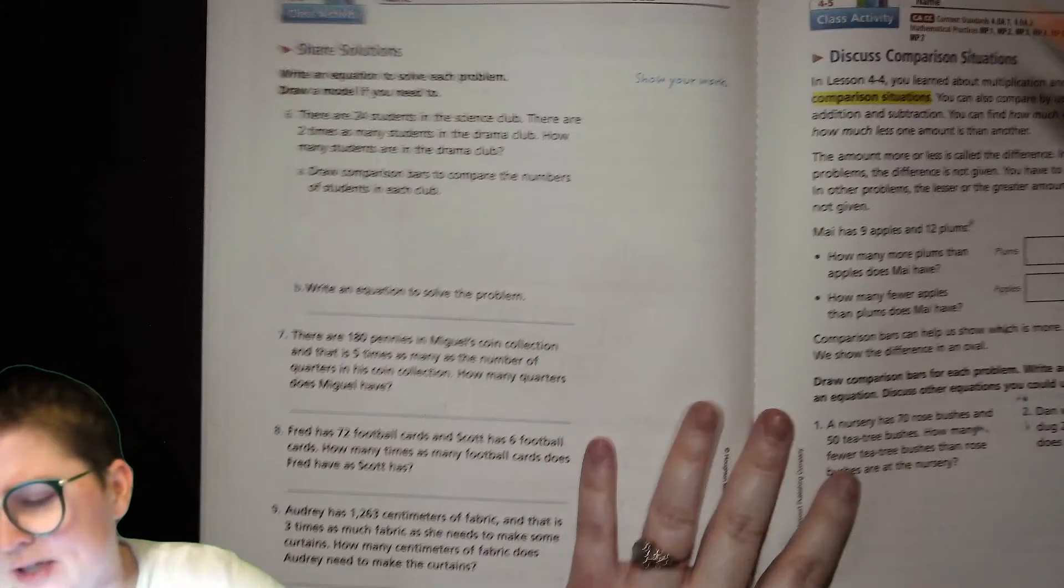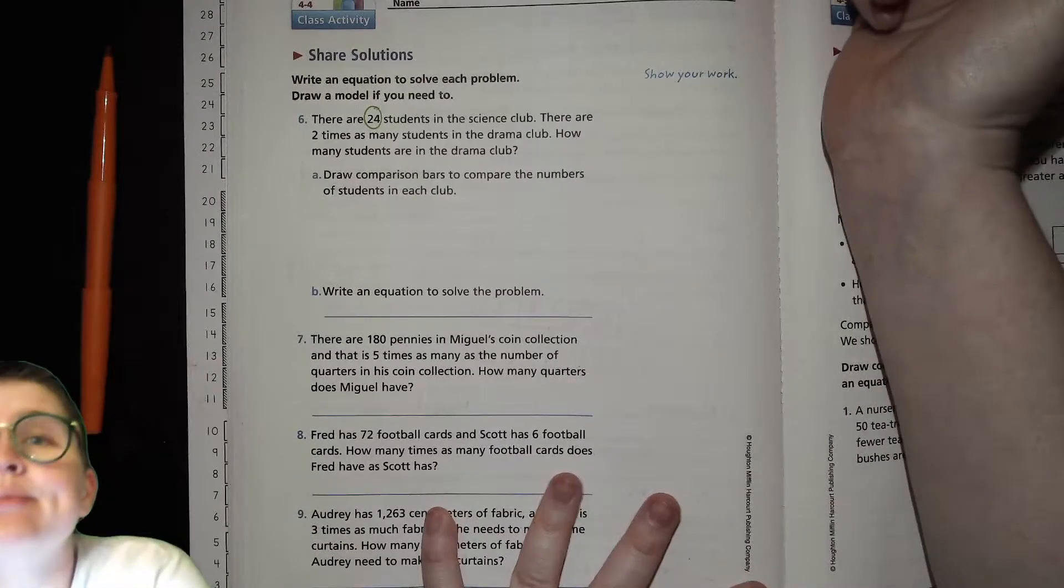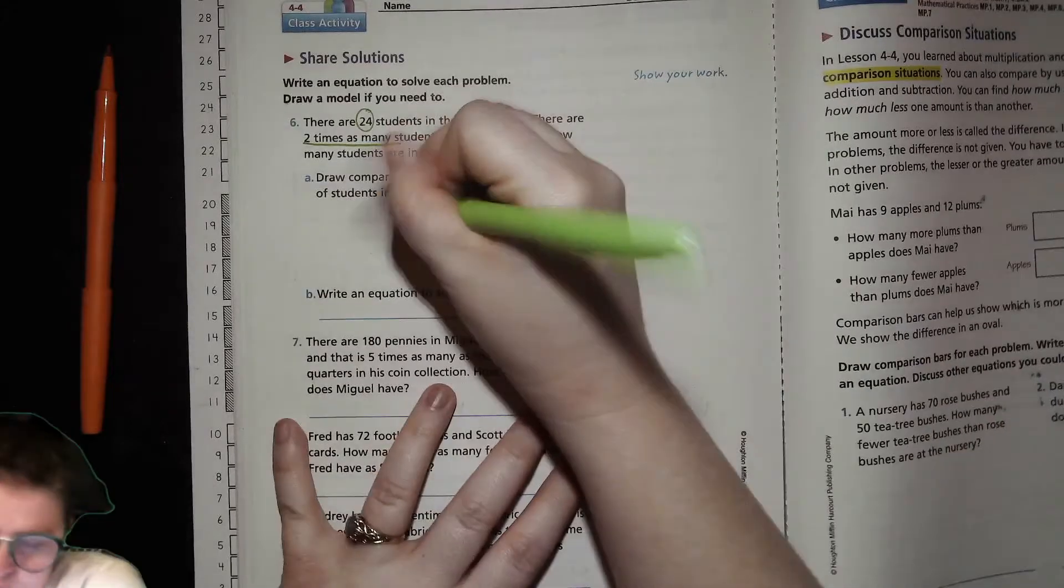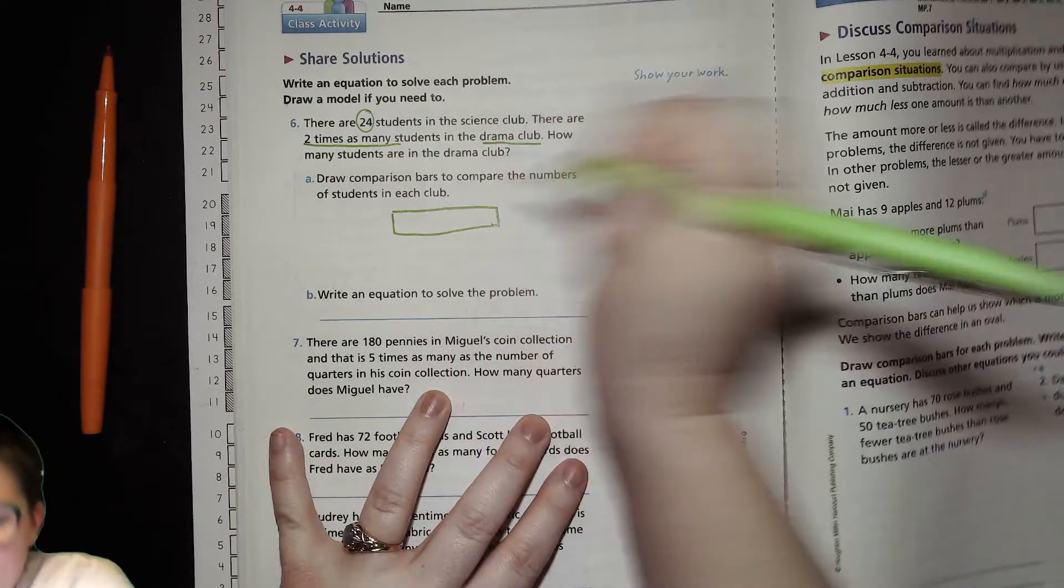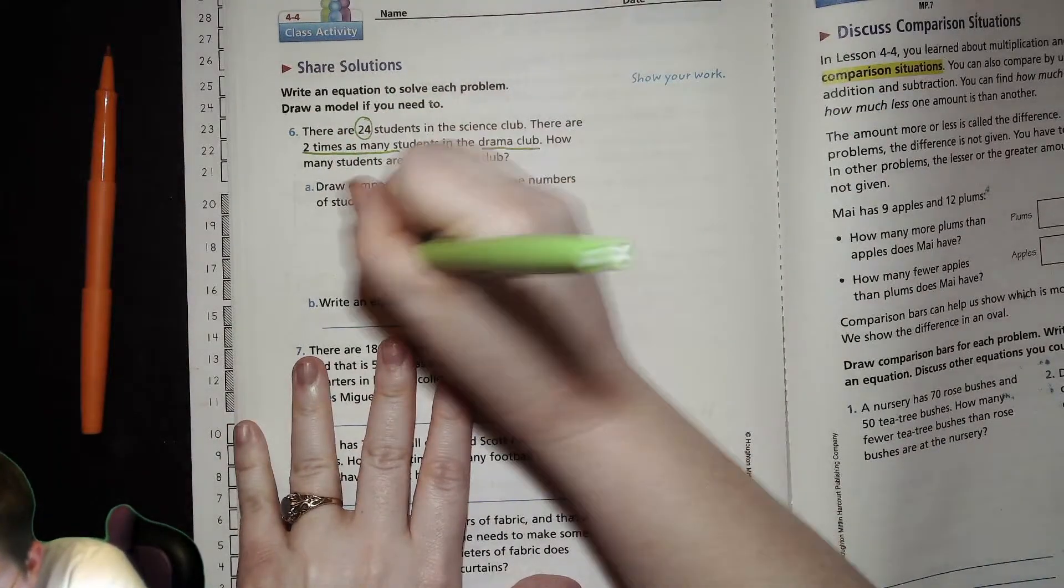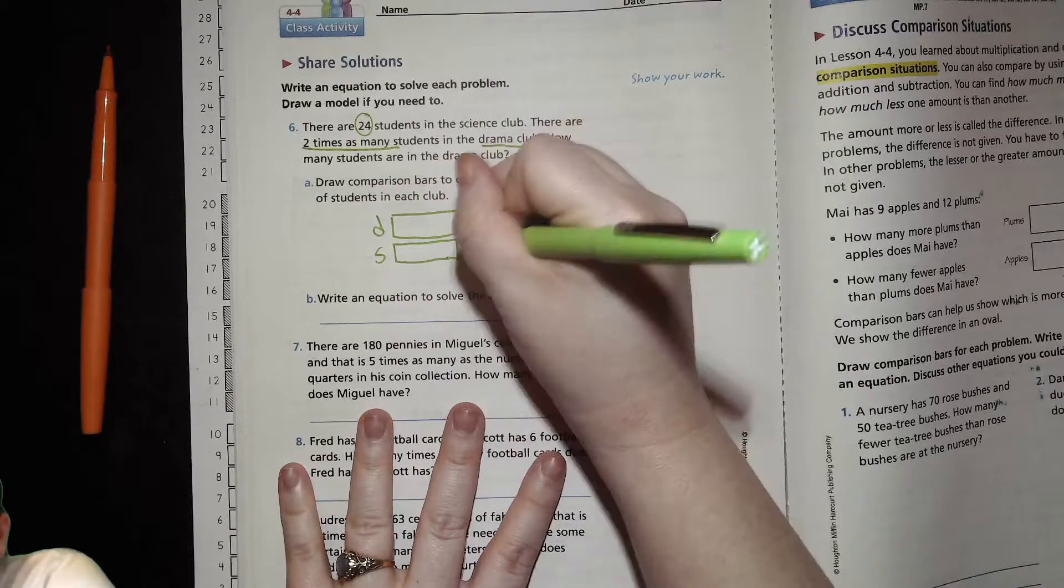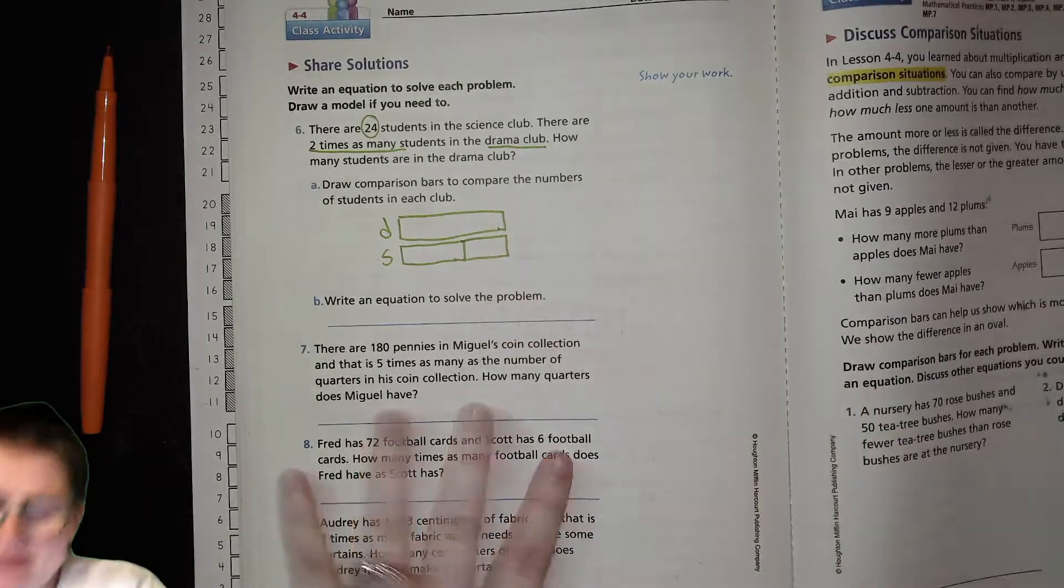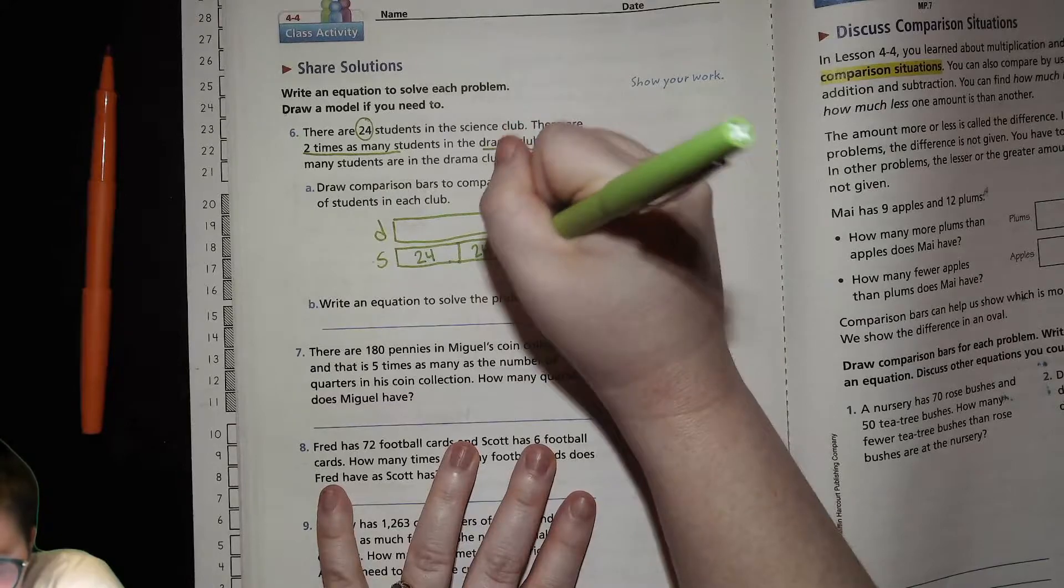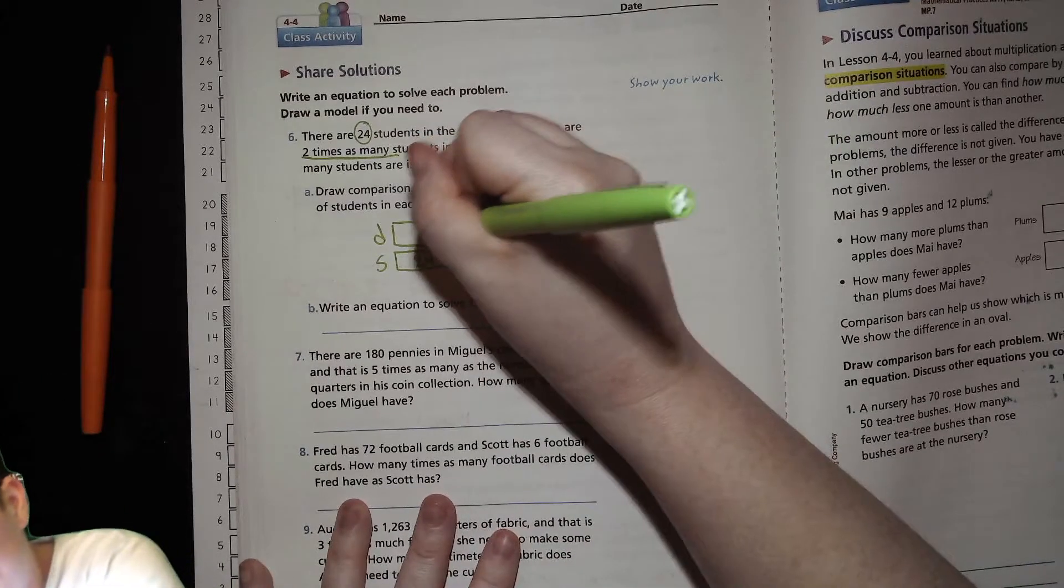Here we go. Write an equation to solve each problem. Draw a model if you need to. There are 24 students in the science club. There are two times as many students in the drama club. So the drama club is the bigger group and the science club is the smaller group. We know that the science club, if you were to have it two times. Pretend those are even. No, they're not, but it's fine. If you were to have the science club once and then twice, it would be equal to the same amount as the drama club. So then we're just having 24 times 2 or 24 plus 24. We'll do it that way. So that would be 48.